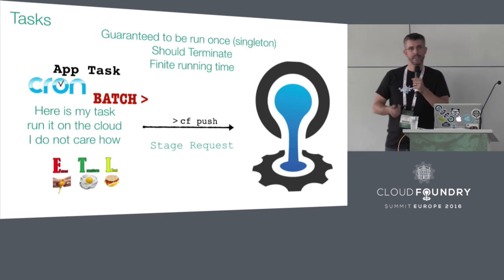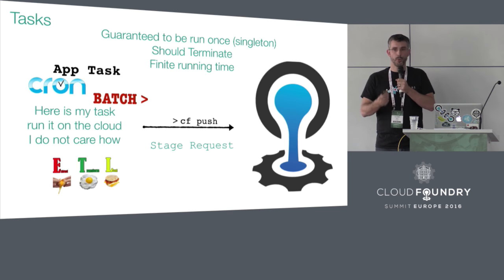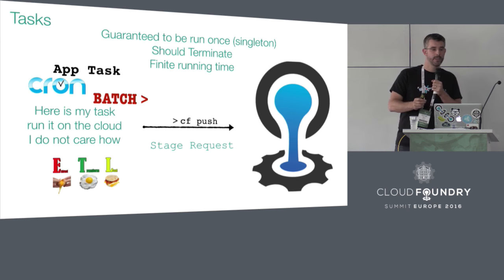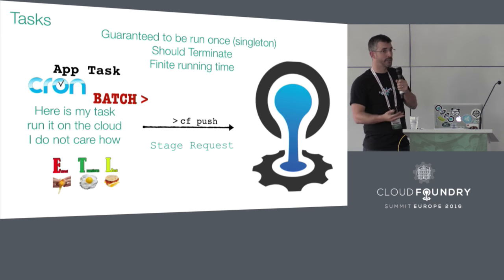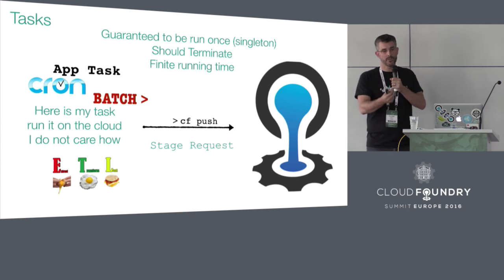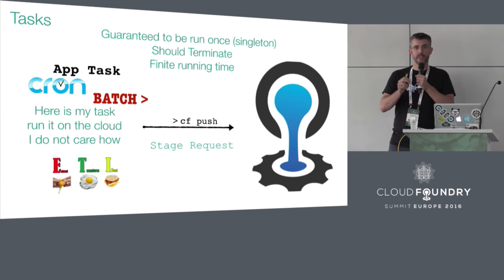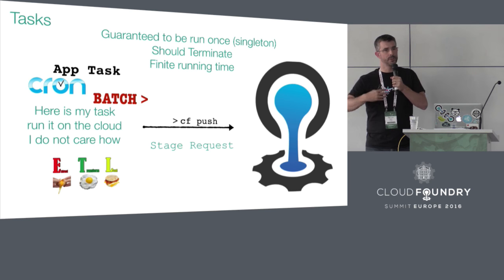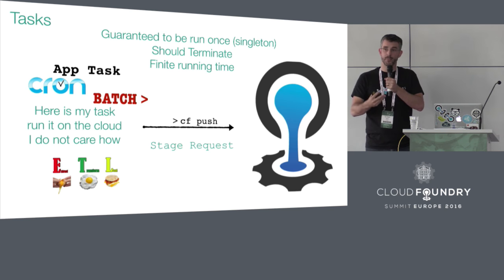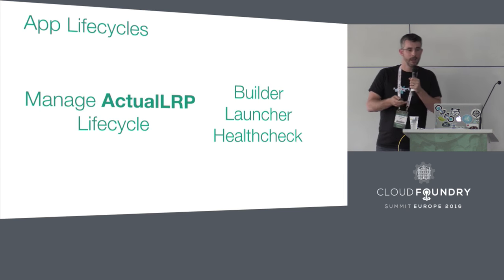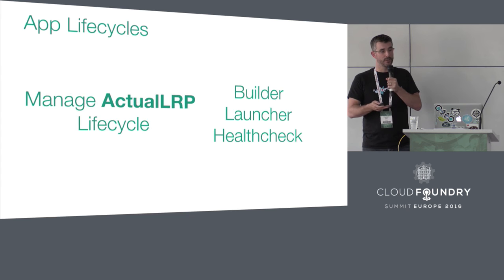Tasks are guaranteed to run at once — they're effectively a singleton. They should always terminate and have a finite running time. Tasks could be anything from a one-off script like a batch job or a cron job, or maybe you're doing stream processing using ETL. Applications themselves can call out and run one-off tasks using this task abstraction. But the other important feature is that Cloud Foundry itself uses tasks — when you ask Cloud Foundry to run your application, your application goes through the staging process, and that staging request from Diego gets encapsulated as an internal task from Diego.